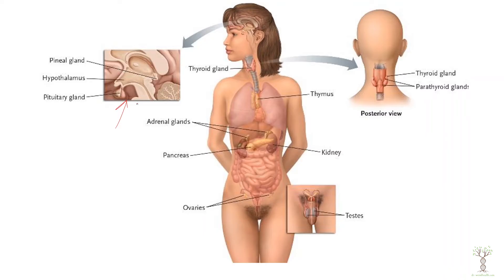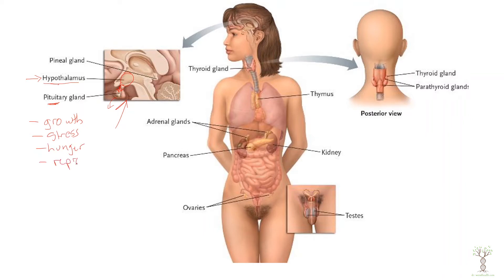Now let's have a look at the various endocrine glands — this is just an overview with general functions, and future videos will look at each one in more detail. Inside the brain we have the hypothalamus and the pituitary gland. The hypothalamus connects with the pituitary gland in two different ways — there's an anterior and a posterior pituitary. The hypothalamus controls the pituitary, and then the pituitary releases hormones into the bloodstream that impact various other glands. Together they regulate growth, the stress response, hunger and thirst, reproduction, and metabolism.